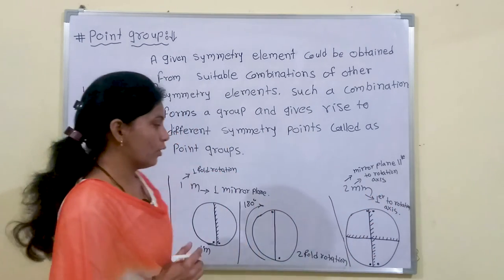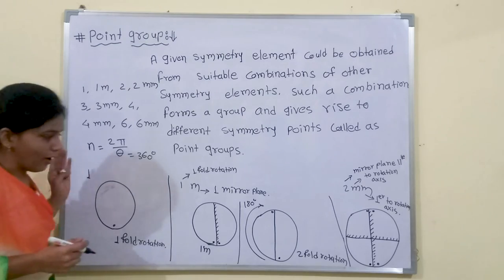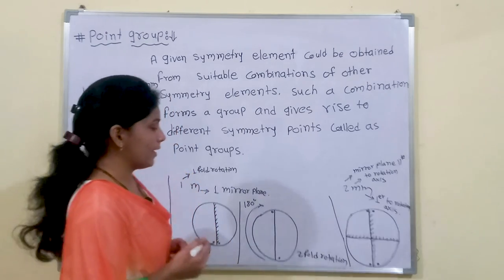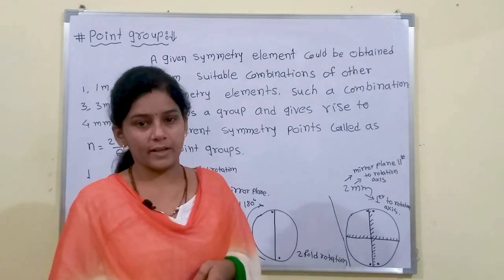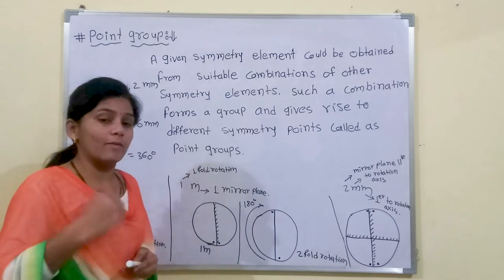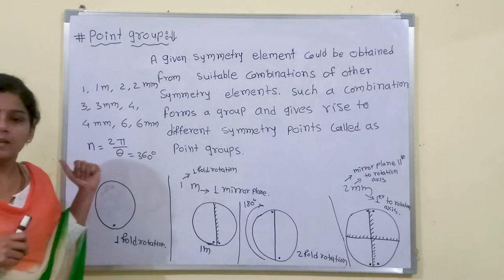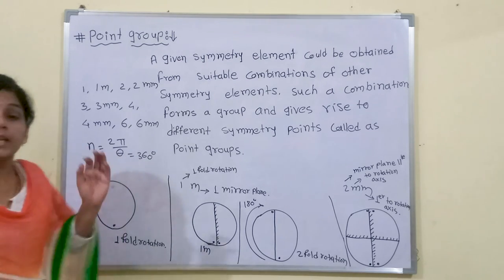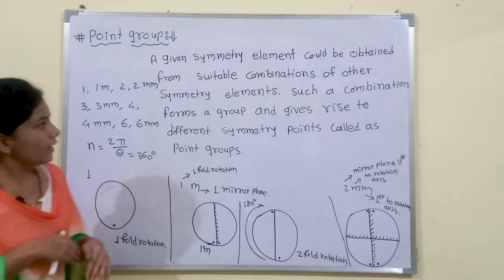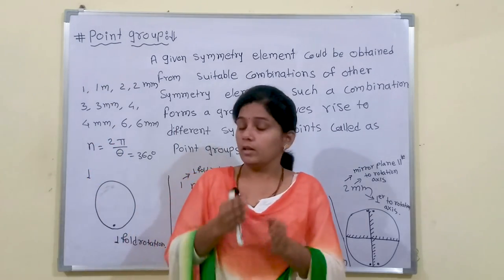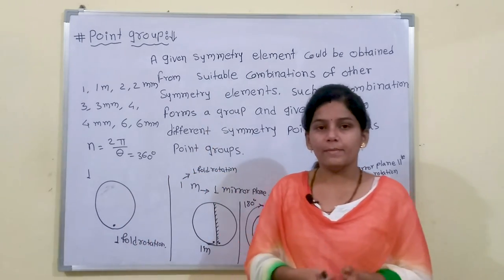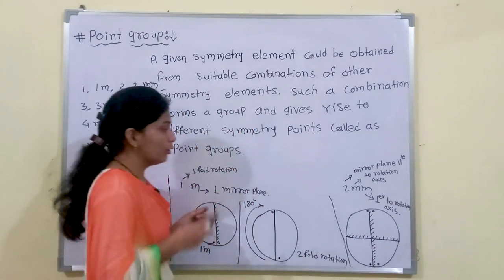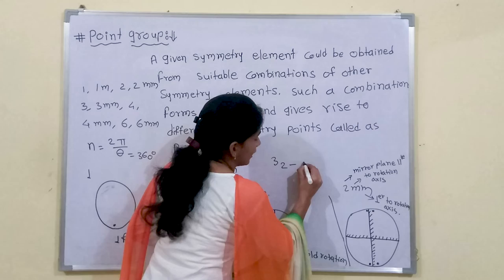The first 'm' is the mirror plane parallel to the rotation axis and the second 'm' is perpendicular to the rotation axis. This is all about the combinations of rotation and reflection symmetry operations, which we can simply call roto-reflections. From rotation and reflection we get 10 different symmetry operations, also called 10 point groups in 2 dimensions.